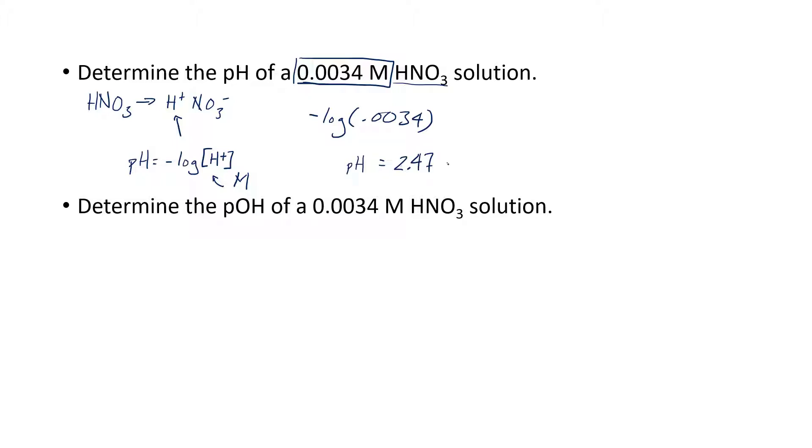The next part asks for the pOH. If you remember, pH and pOH are kind of on the same scale, where pOH and pH always add up to 14. If the pOH is 0, the pH will be 14. We already know that the pH here is 2.47, so the pOH is just 14 minus 2.47, and that is 11.53.